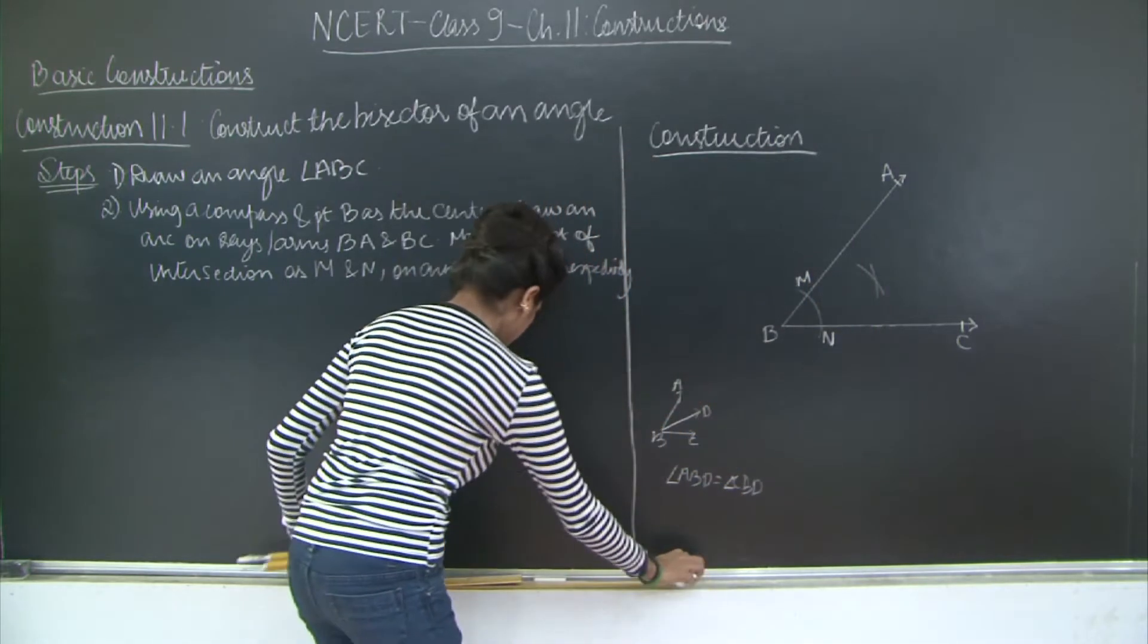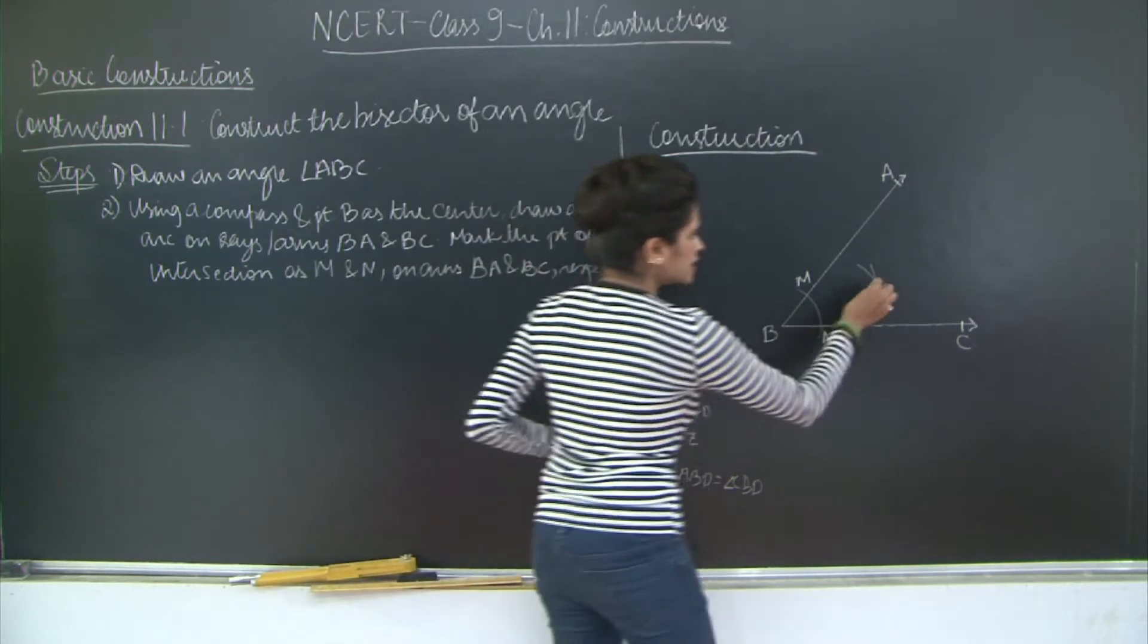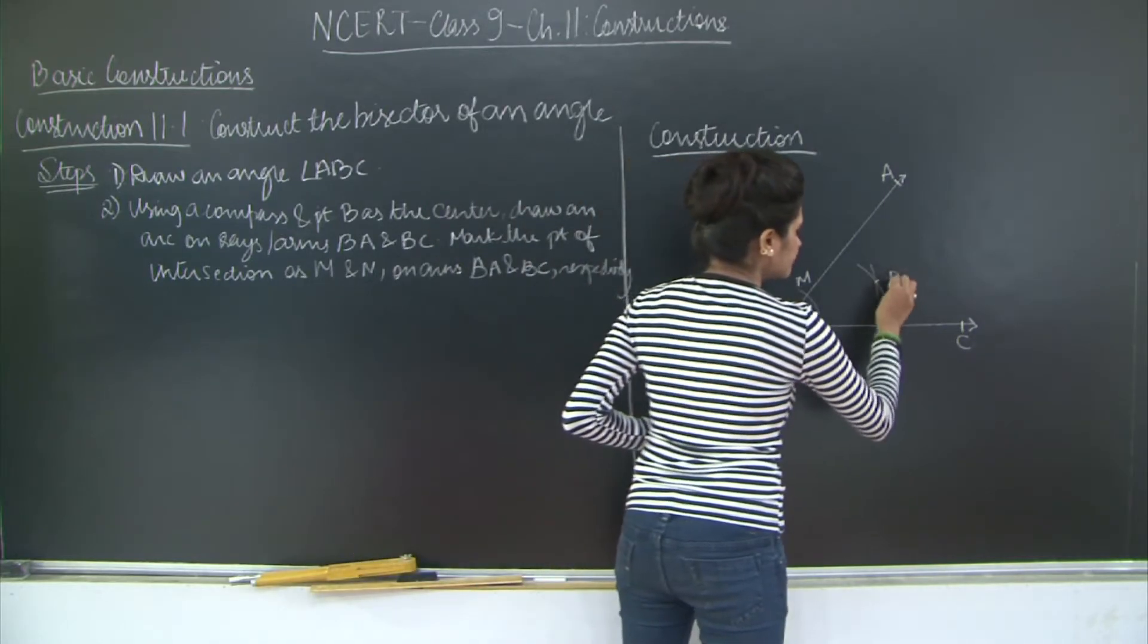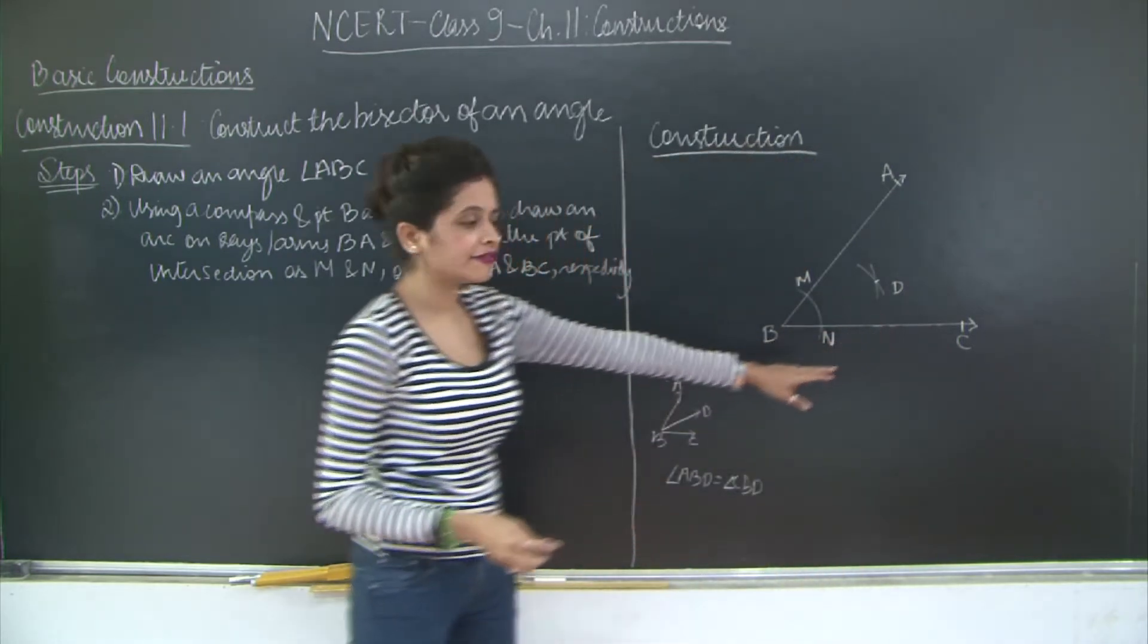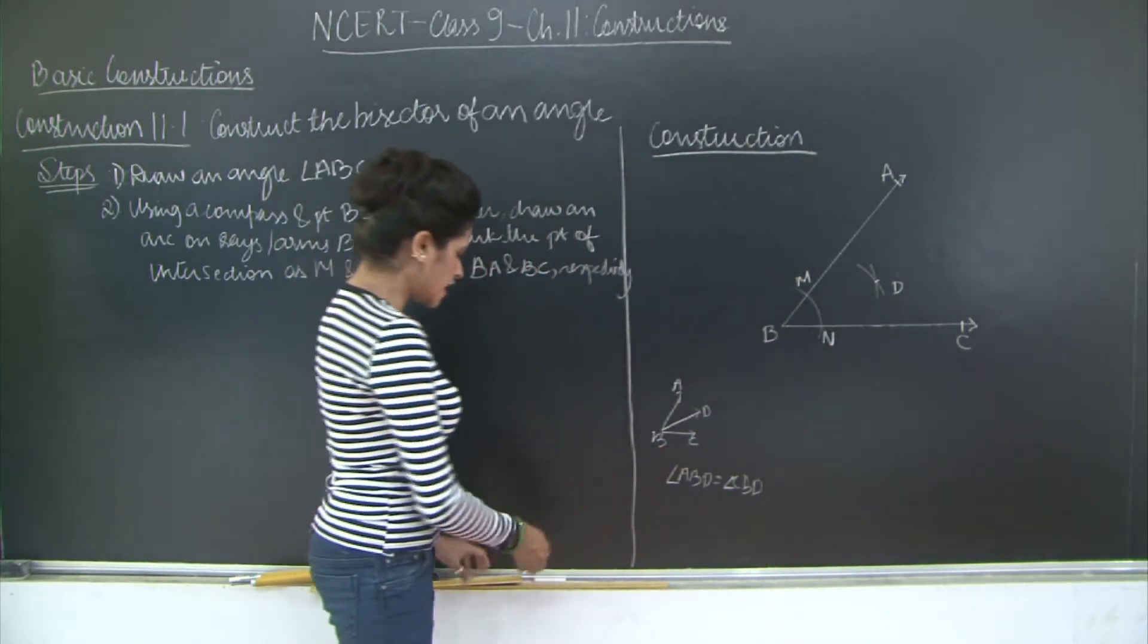So this point of intersection, you need to mark it as D. I will call it D. Just marking it a little further because what we are going to do is, once this is done,